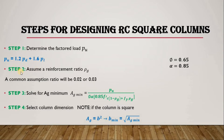After calculating the factored load PU, the next step is to assume a reinforcement ratio ρg. A common assumption would be 0.02 or 0.03, because this makes the column more economical. The reinforcement ratio basically means the amount of steel we have in the column relative to the concrete. A reinforcement ratio of 0.02 means two percent of the column consists of steel while 98 percent consists of concrete.